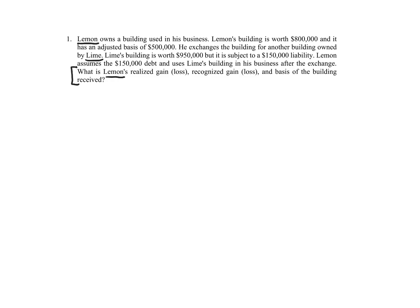The question is asking us for realized gain or loss — number one — recognized gain or loss — number two — and the basis of the building — number three. Even if the problem just said 'tell me the tax consequences for Lemon,' you would want to go through these three things anyway. So if you have a simulation on the CPA exam or a long problem on a law school exam and it asks for the tax consequences to one party, they want you to tell them what you think is important.